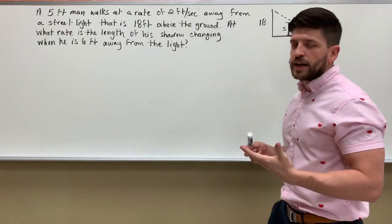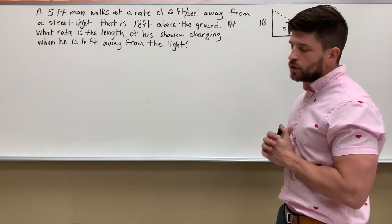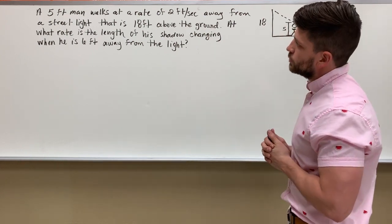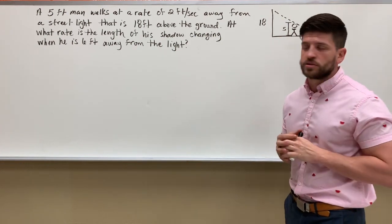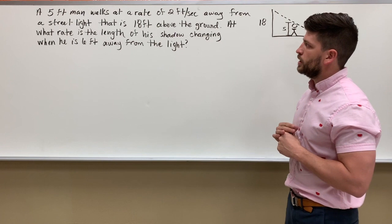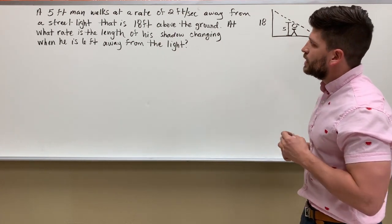Okay, now we have the shadow lamp post. It's called a couple different things, but another popular related rates problem. So what we have going on in this one: a five-foot man walks at a rate of two feet per second away from the street light that's 18 feet above the ground. At what rate is the length of his shadow changing when he is six feet from the light?